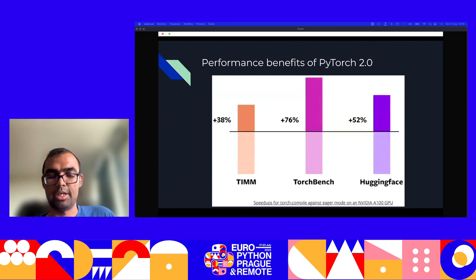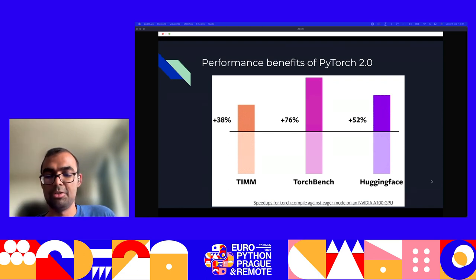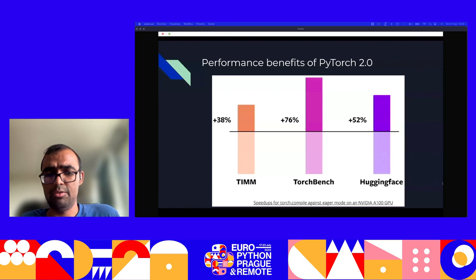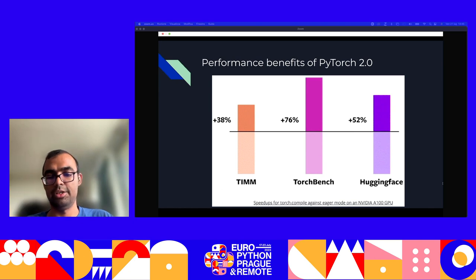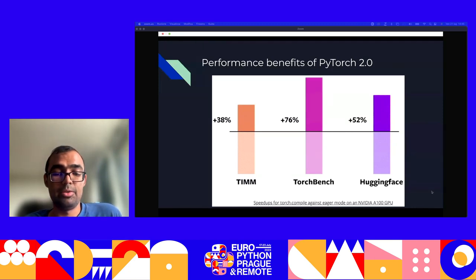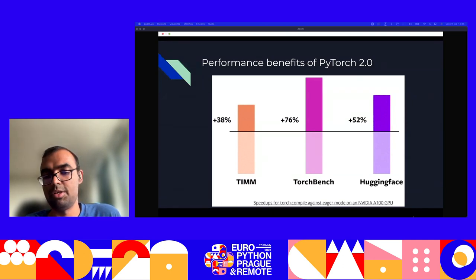This is what the speedups look like. A couple of caveats: these are somewhat old results, so it's possible that newer additions to Torch.compile have made results even better. We are comparing the performance of eager mode, which is PyTorch 1.x, against Torch.compile. These benchmarks were done on an NVIDIA A100 GPU. You see roughly 38% speedup on average on TIMM models, 76% on TorchBench models, and another 52% on HuggingFace models — all just by doing a Torch.compile, nothing else.